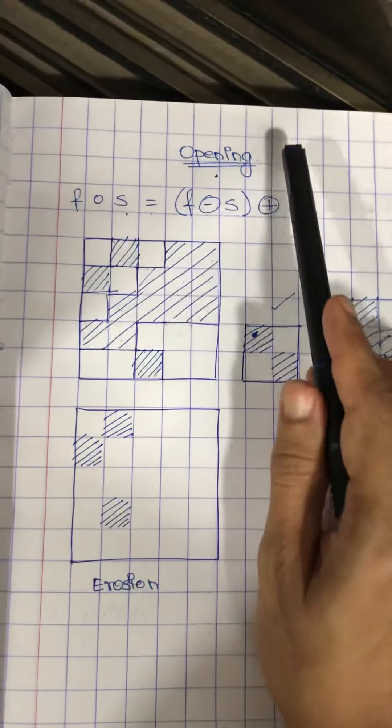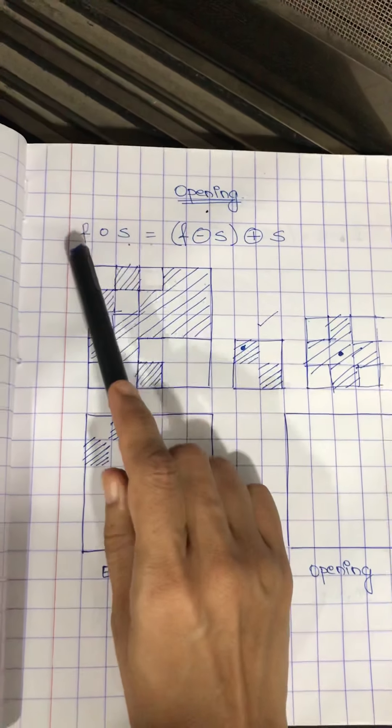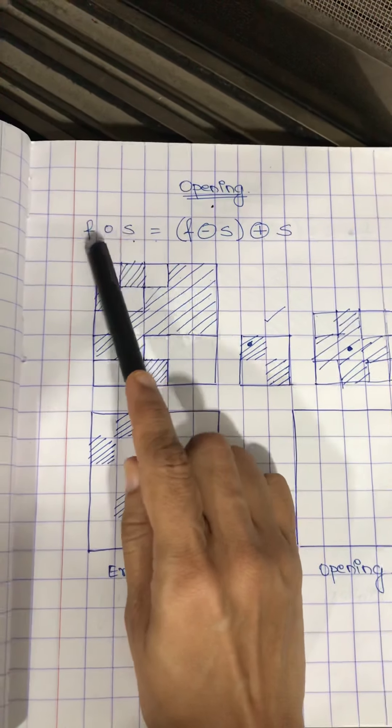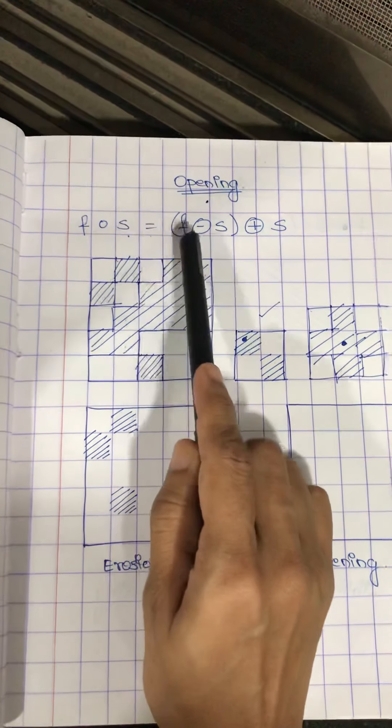Now we move on to the next operation, that is opening. Opening is given by image opening by the structuring element. This is the symbol of opening, a small circle, which is given by image.